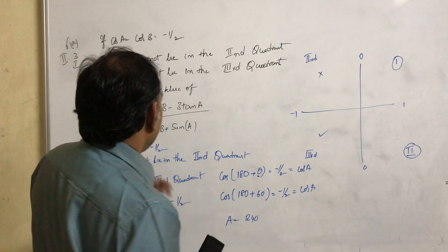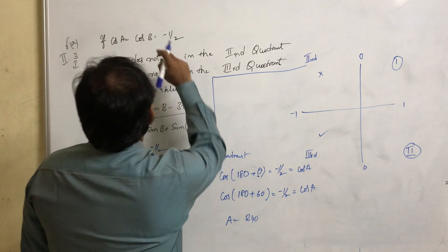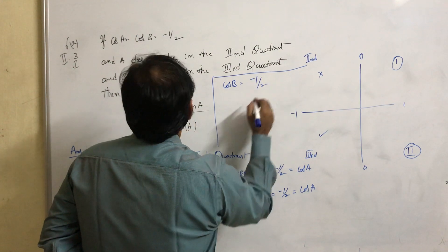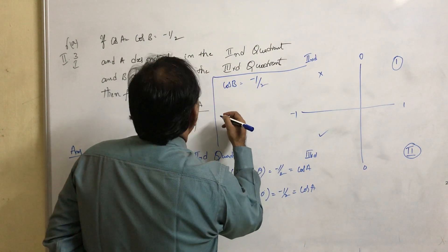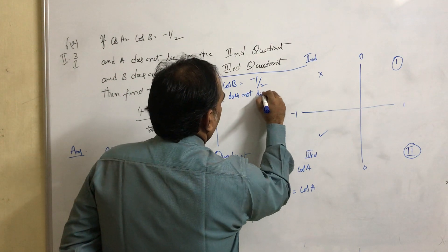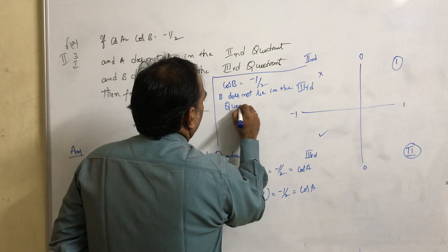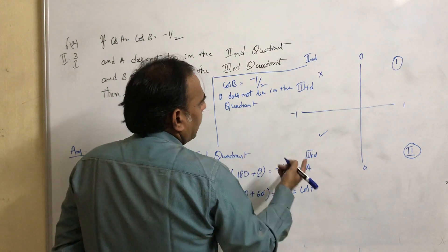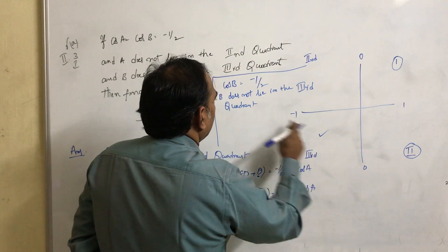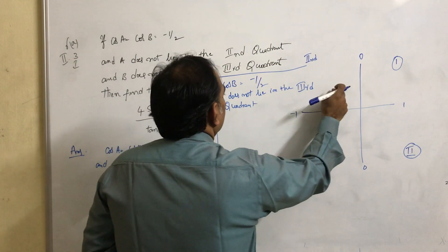Now take cos b. Given: cos b equal to minus 1 by 2 and b doesn't lie in the third quadrant. Cos is negative in the second quadrant and third quadrant. But since b doesn't lie in the third quadrant, b lies in the second quadrant.